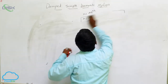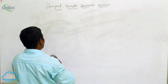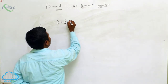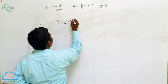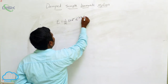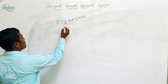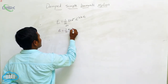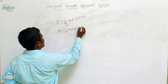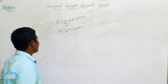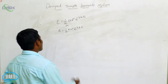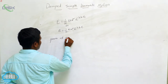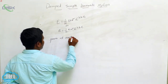Next, how much energy do we have in this case? E is equal to ½·μ·A²·e^(−2bt). Some textbooks also write E = ½·k·A²·e^(−2bt) — both are the same. Next, there is the power of dissipation.